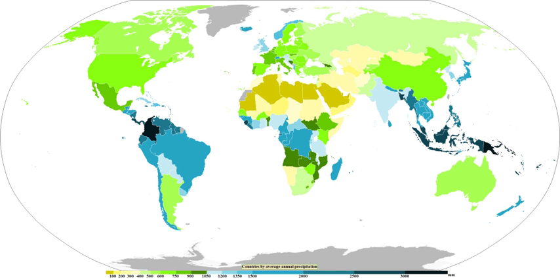Most precipitation occurs within the tropics and is caused by convection. The movement of the monsoon trough, or intertropical convergence zone, brings rainy seasons to savannah climes.